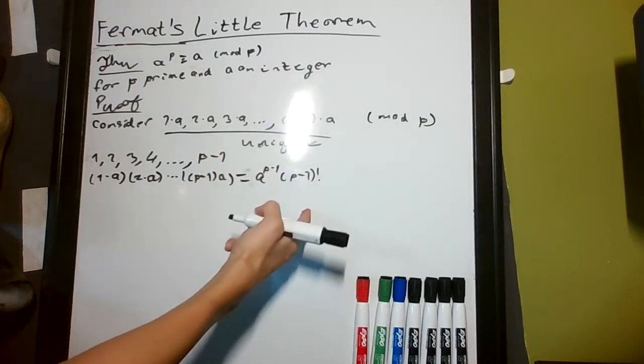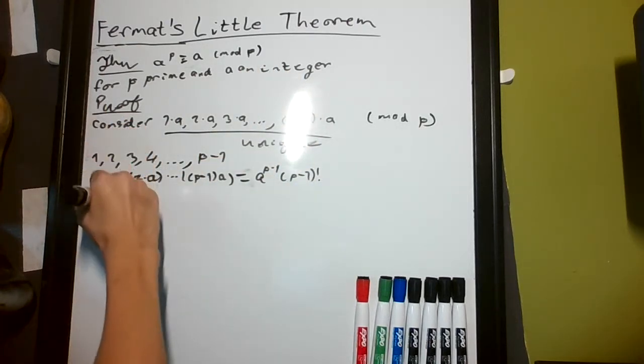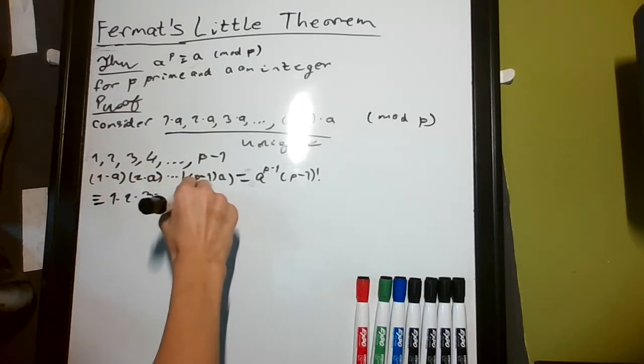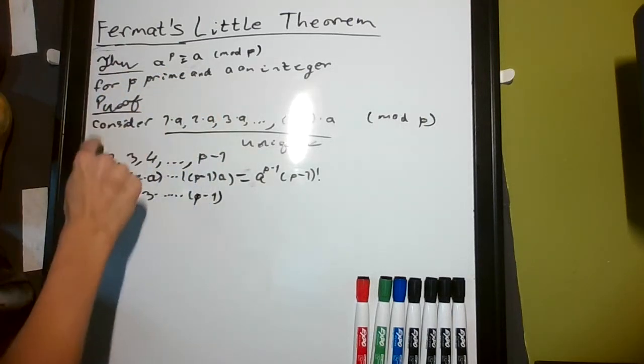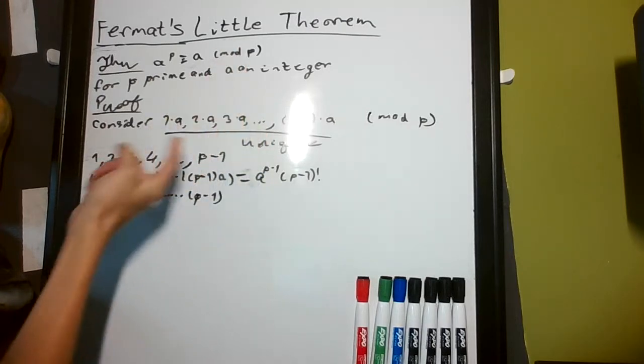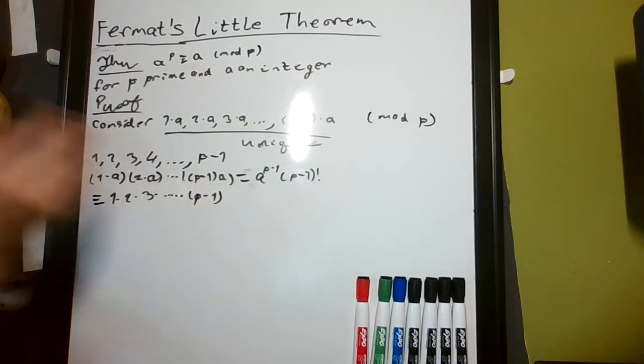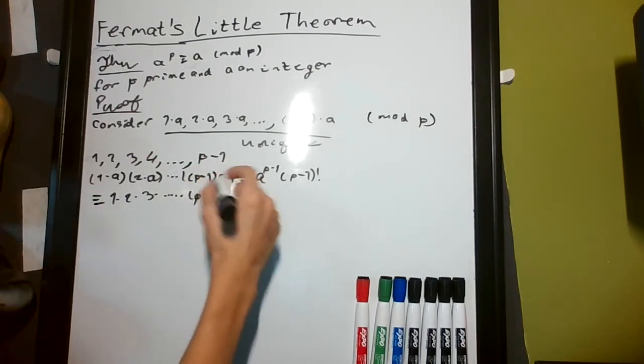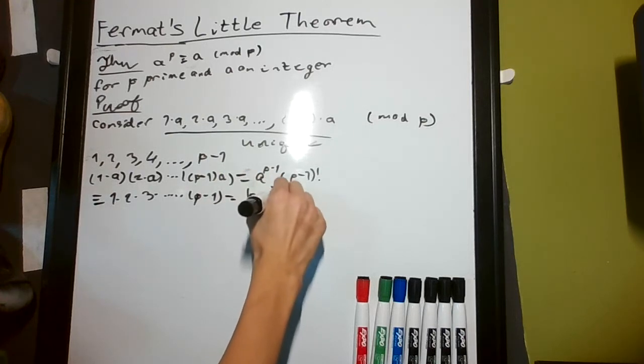This is congruent to 1 times 2 times 3, all the way up to p minus 1, right? That's because each of these individually is congruent to one of these, and multiplication is commutative, so you can rearrange them. And this equals p minus 1 factorial.